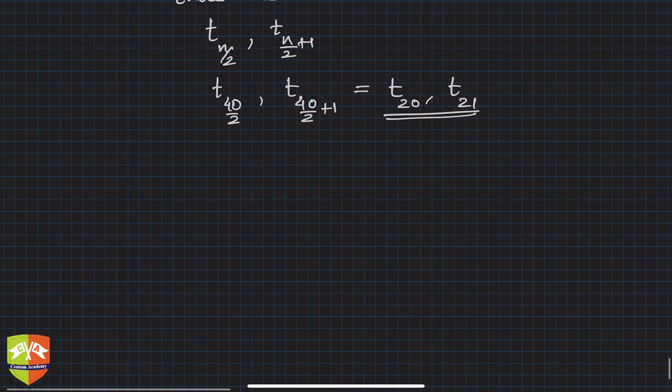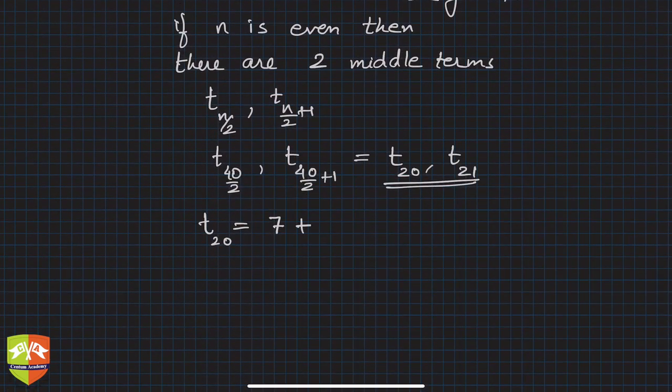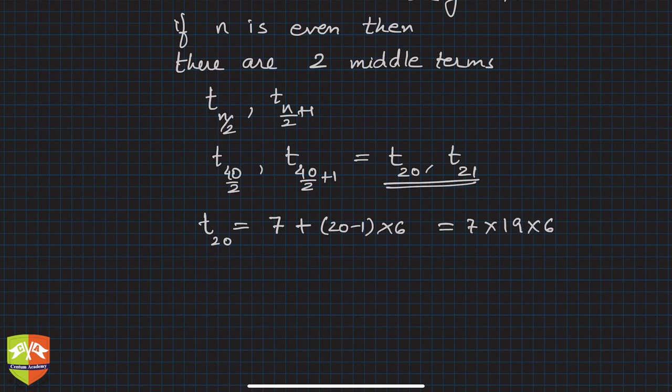So 20th and 21st term. Let's find out what will be t 20. t 20 is not the cricket match, t 20 is term 20 here. t 20 is first term, what is first term? First term was 7, plus 20 minus 1 times 6, which is 7 plus 19 times 6, which happens to be 121.